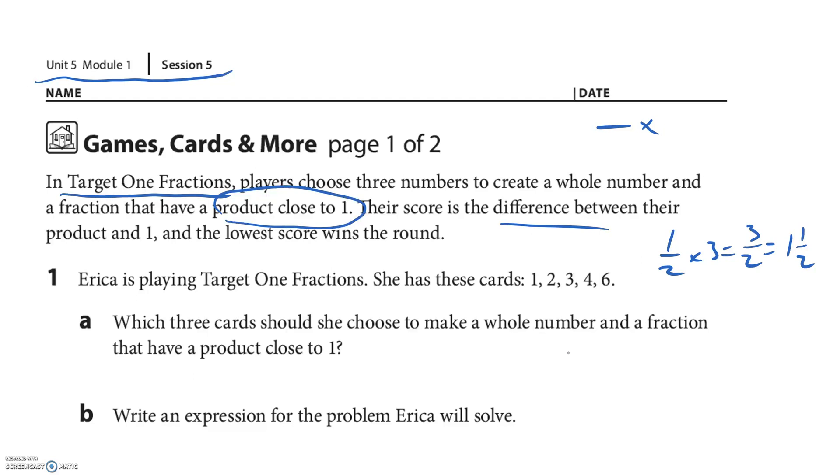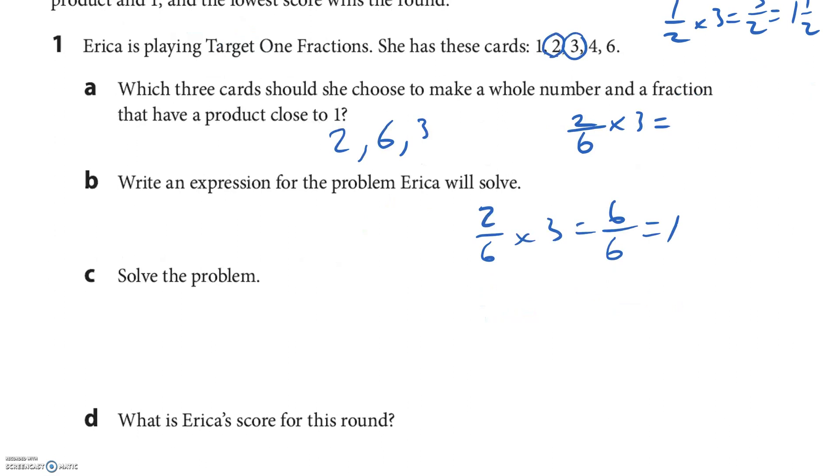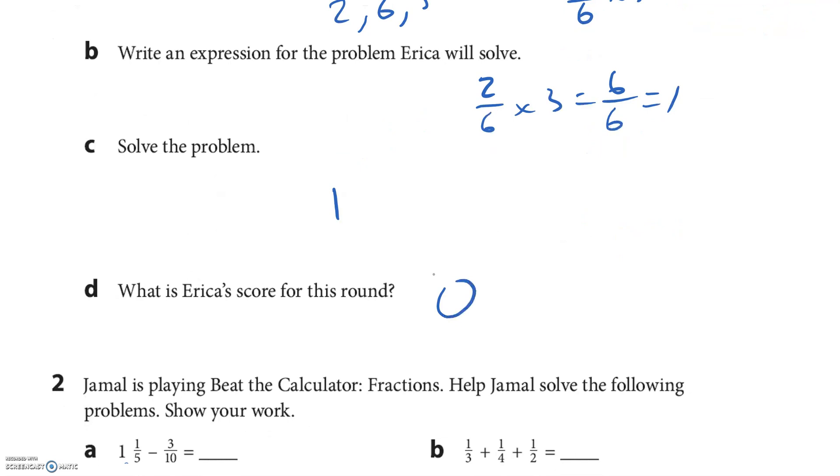Let's go two, two-sixths, times three. So two-sixths and three. Two times three is six, and six over six equals one. My answer is one. Two-sixths times three equals one. The score for Erica would be zero because the difference between her score of one and one is zero.